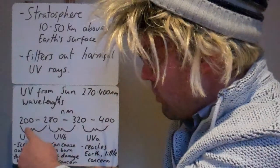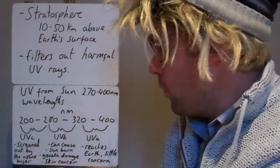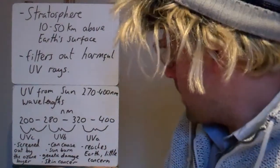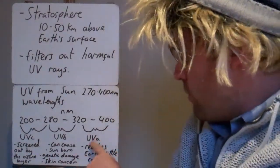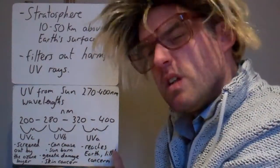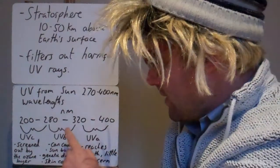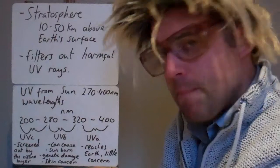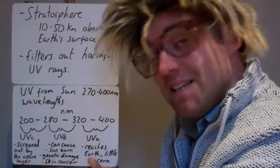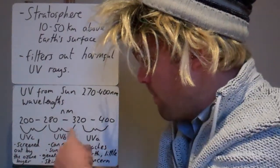Between 200 and about 280 nanometers, that's what we call UV-C and all that UV is completely screened out by the ozone layer. At the other end, UV-A, that reaches the Earth's surface but that doesn't cause a lot of concern. It's not very damaging. The main problem is here, the UV-B. This can cause sunburn, it can cause genetic damage, and it can cause skin cancer. This is the bit we really worry about.